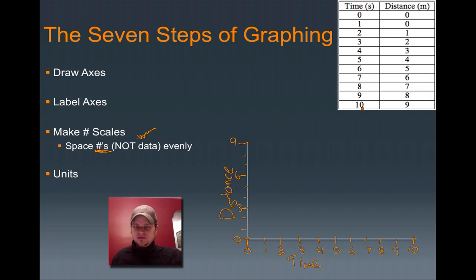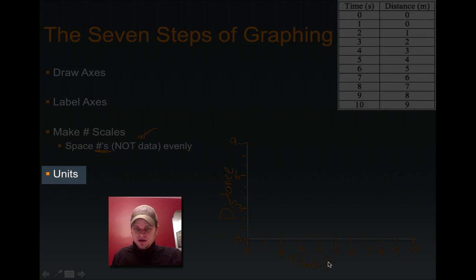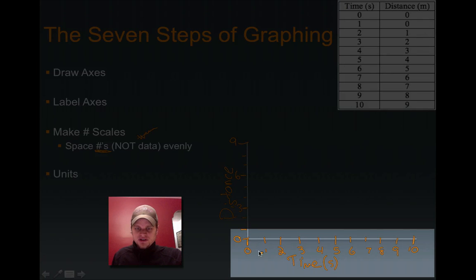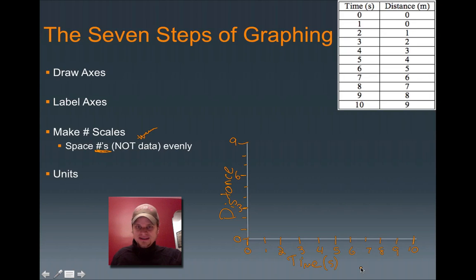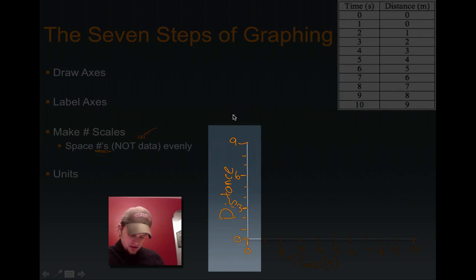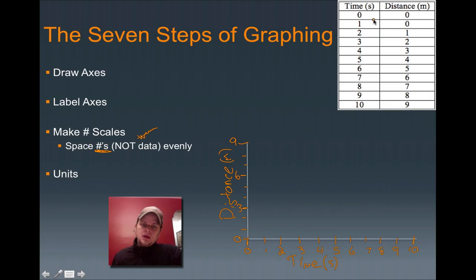But I'm missing something. I'm missing something that's going to lose me points. I'm missing my units. And for time, I'm measuring it in seconds. Otherwise, I don't know what 1, 2, 3, 4, 5, 6, I don't know what those mean. Could be hours, could be days, could be monkeys, I don't know. But that's time in seconds. And distance should be in meters. And we know that just based on this little section up here.